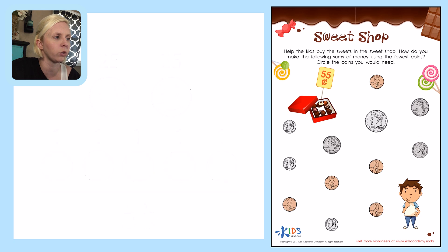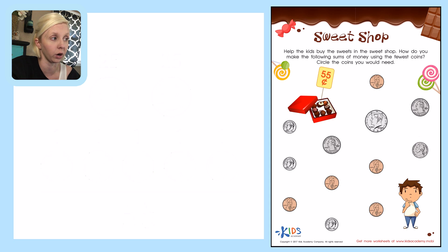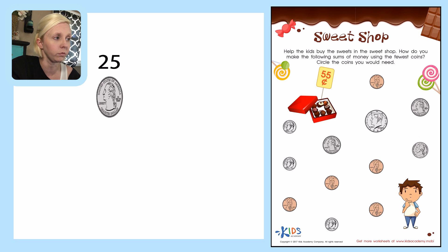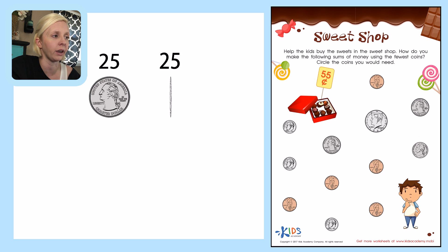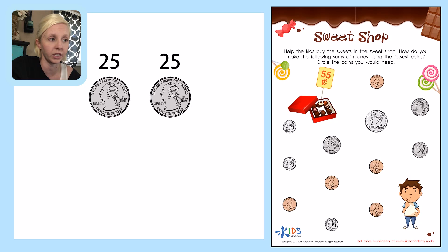Let's use the quarters again. I want to use something big so it's fewer coins than adding them all up. So I could go 25 and again 25. That's 25 plus 25, which equals 50. And I need another way to add five cents.